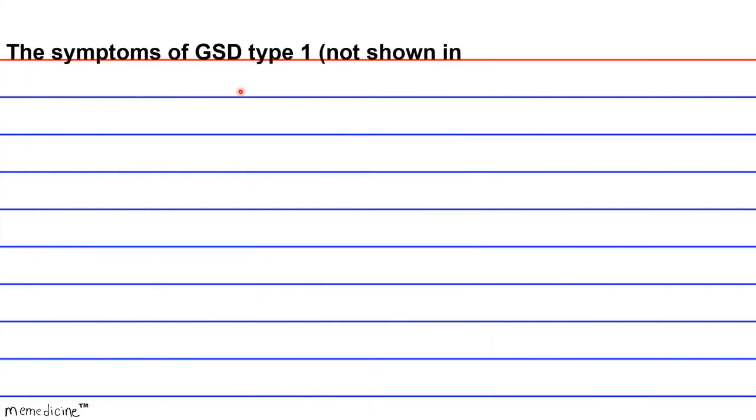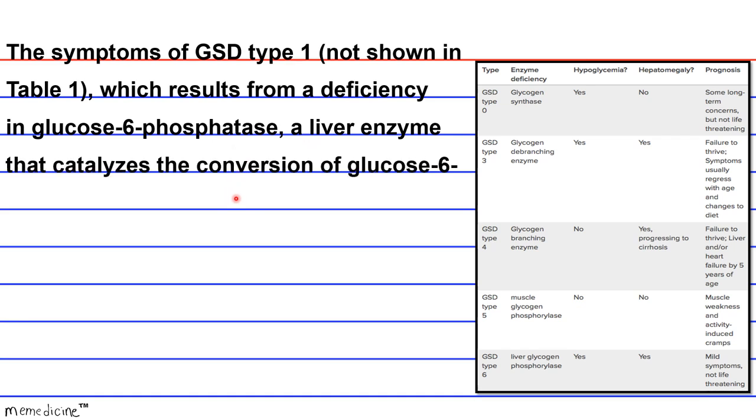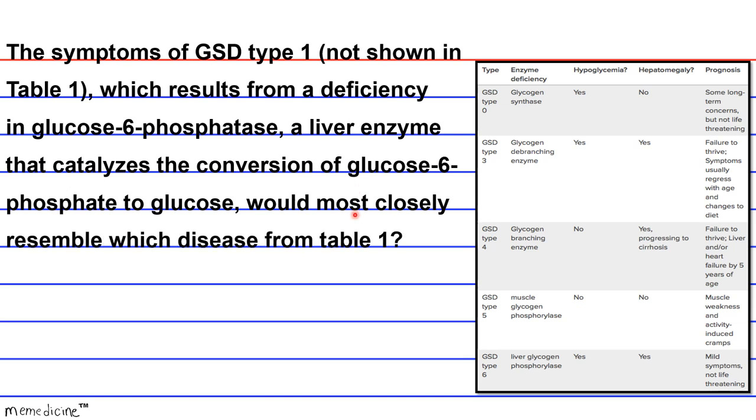The symptoms of GSD type 1, that's glycogen storage disease type 1 - so there is a type 1. Not shown in table 1, which results from a deficiency in glucose 6-phosphatase, a liver enzyme that catalyzes the conversion of glucose 6-phosphate to glucose, would most closely resemble which disease from table 1?